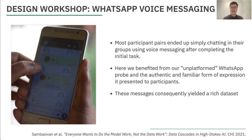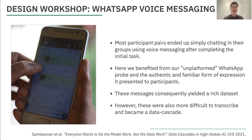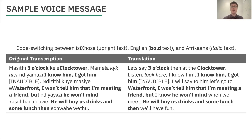I'm going to skip the results of those activities and focus instead on the discussions surrounding WhatsApp voice messaging that these activities stimulated. What ended up happening is that after completing the activities, most participant pairs ended up chatting in their groups using voice messaging. We benefited from our unplatformed WhatsApp probe and the authentic and familiar form of expression it represented to participants. These messages also yielded a very rich dataset, but they also made the transcription task a lot more difficult and error prone. Here's a sample message — notice how the speaker uses elements of Isixhosa, English, and even Afrikaans, a process referred to as code-switching. In this sample, code-switching happens within sentences, but in two instances — 'e-clock tower' and 'e-waterfront' — also within a word. A message like this highlights the challenges of developing ASR systems, but we should also celebrate the linguistic creativity and diversity that it showcases.